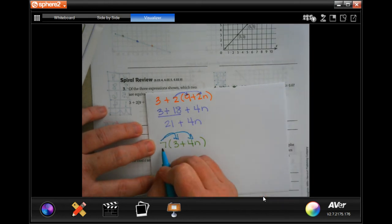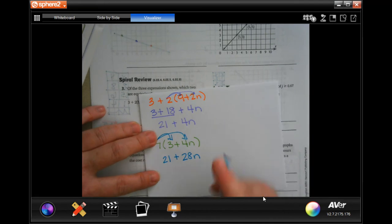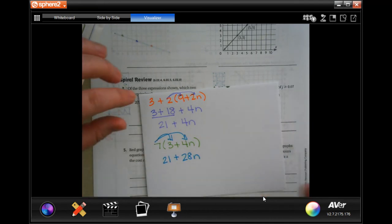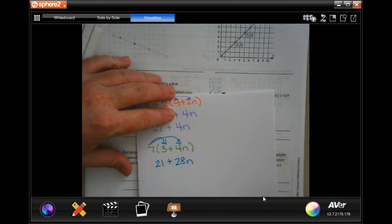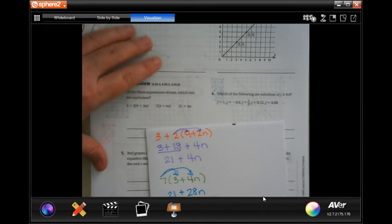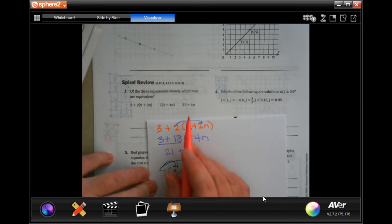When we distribute we're going to get seven times three is 21, and seven times four is 28n. So those two at the very least are not equivalent. We need to do the last one and find out where that is.